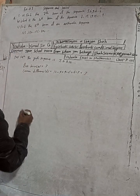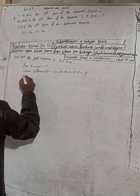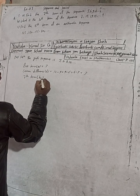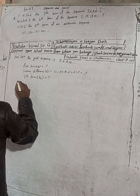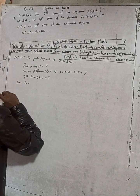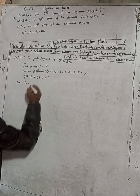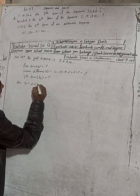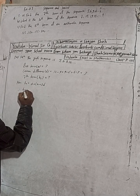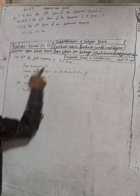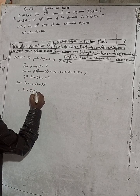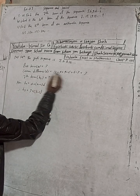Now we need to find the 7th term, T7. Using the formula T(N) = A + (N − 1) × D, we substitute: T7 = 3 + (7 − 1) × 3, where A is 3, N is 7, and D is 3.